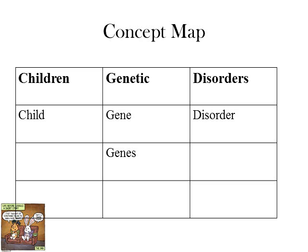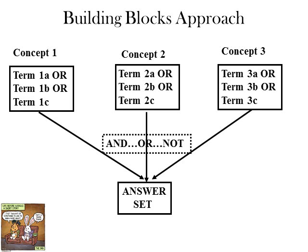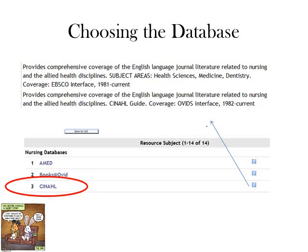The building blocks approach is that you take concept one and combine all your terms using OR, giving you all documents that discuss 'children' or 'child'. Then all documents that discuss 'genetic' or 'gene' or 'genes'. And all documents that discuss 'disorder' or 'disorders'. When you have those three sets, you combine them together using whatever Boolean connector you want to get an answer set.